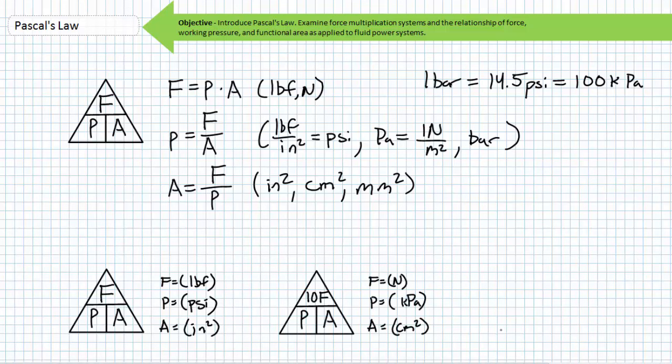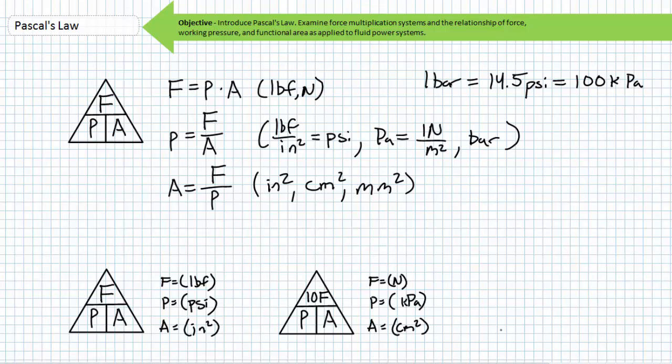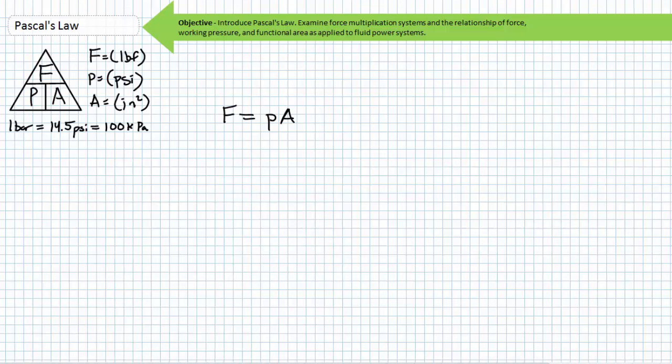If you wish to use force in units of Newtons, pressure in units of kilopascals, and area in units of centimeters squared, Pascal's Law necessitates the inclusion of a times-10 unit conversion. Given that force equals pressure times area, it can be demonstrated that force is directly proportional to both working pressure and functional area. PSI times inches squared — if a PSI is a pound force per inch squared, units of inches squared cancel and we're left with units of pounds force.